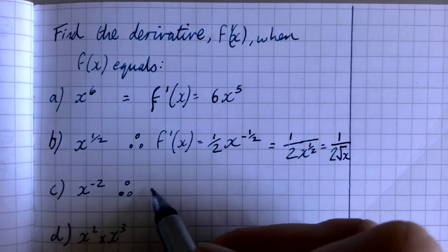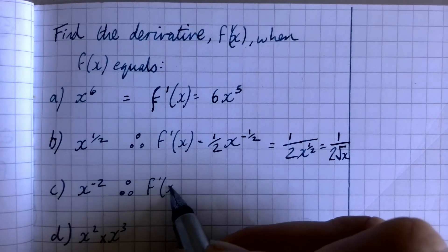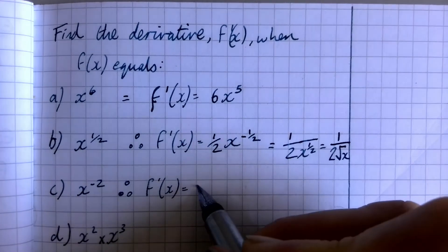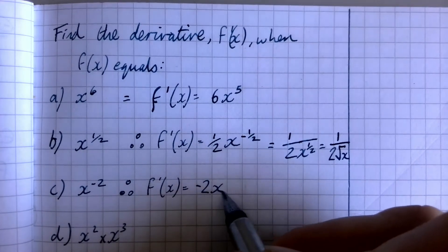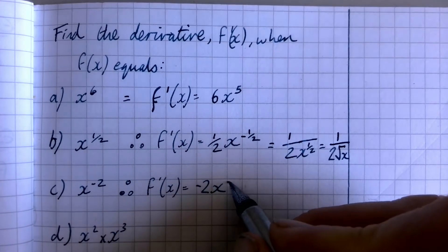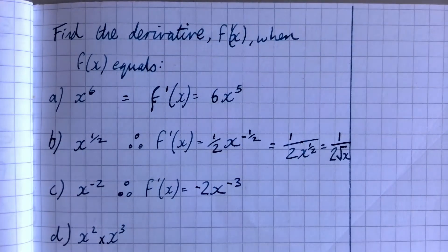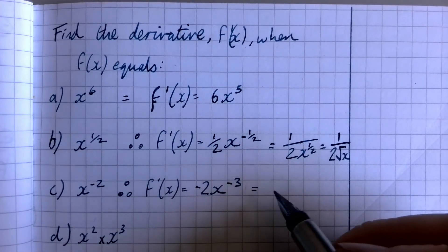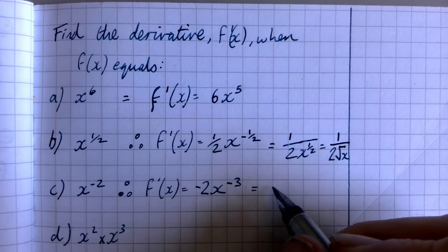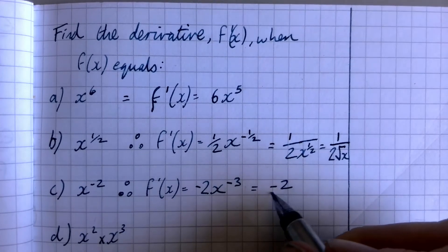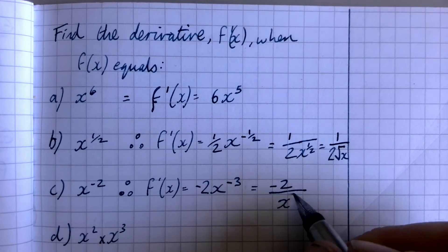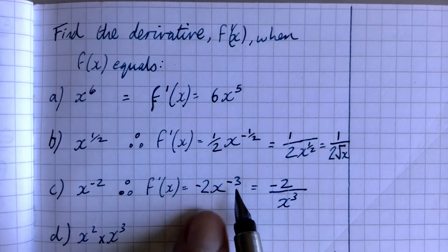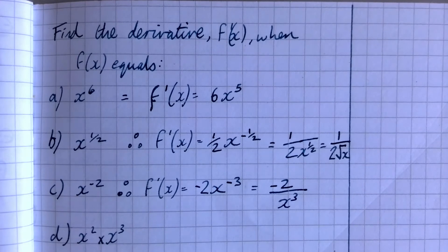On to the next. I multiply by the power minus two, I drop the power by one, goes down to minus three. I can leave it like that. Or if I want to have it in a positive power of x, I could say it's minus two over x to the power three. That's seen as simpler form, but using this and getting comfortable with it is key.